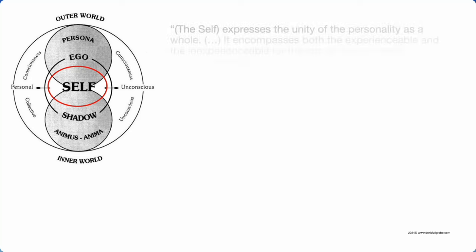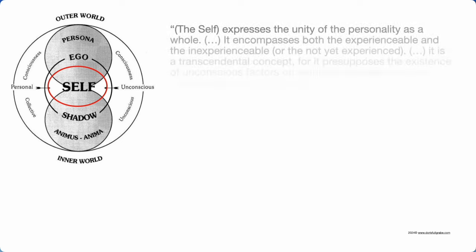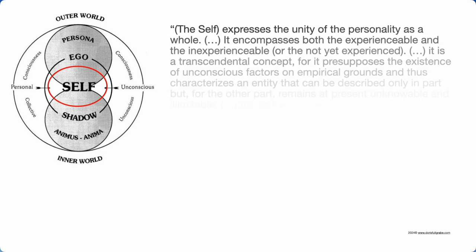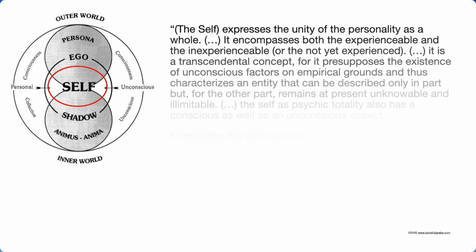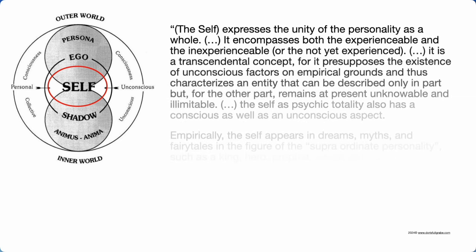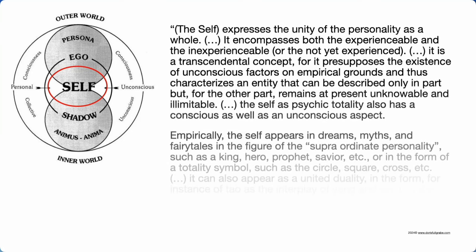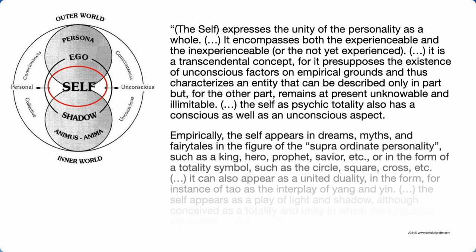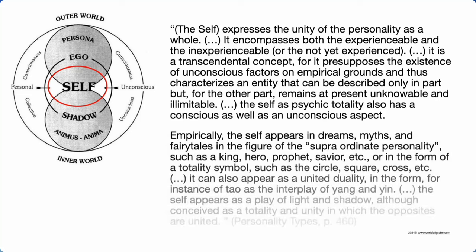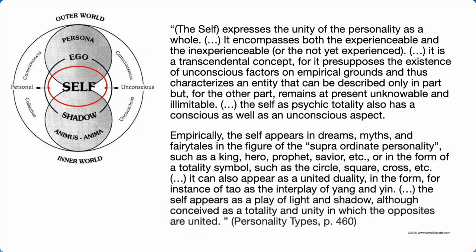The self expresses the unity of the personality as a whole. It encompasses both the experienceable and the inexperienceable. It is a transcendental concept, for it presupposes the existence of unconscious factors and characterizes an entity that can only be described in part, while for the other part remains present, unknowable and illimitable. Empirically, the self appears in dreams, myths and fairy tales in the figure of the supraordinate personality — such as a king, hero, prophet, saviour — or in the form of a totality symbol such as a circle, square, or cross, or as a united duality like Tao as the interplay of yang and yin.